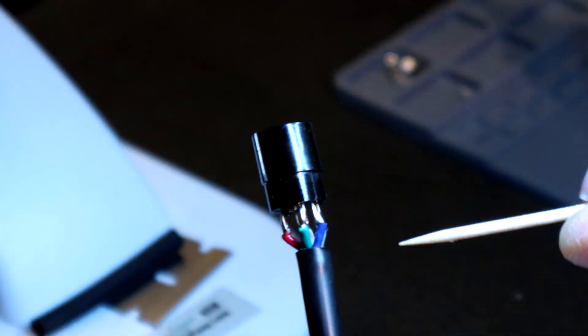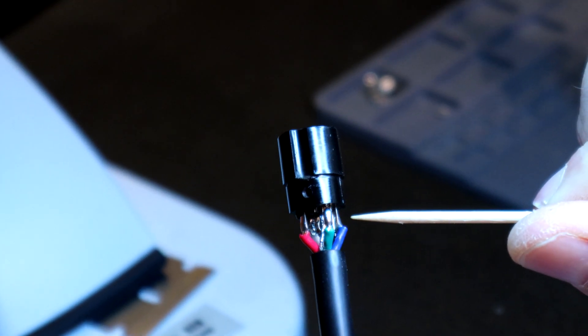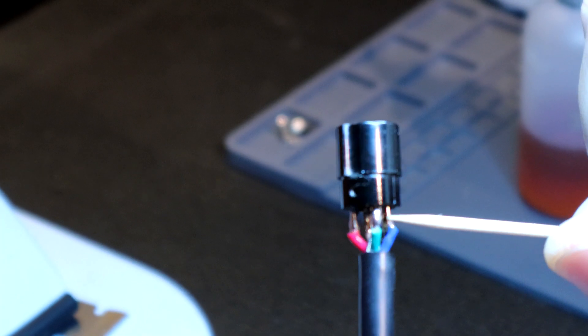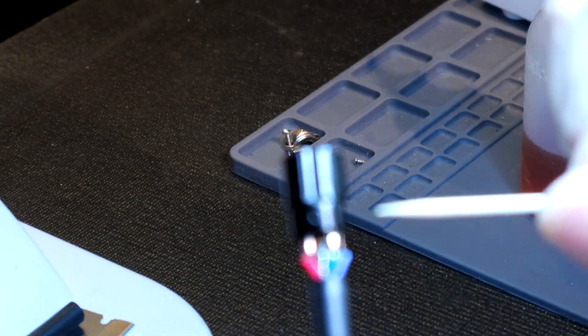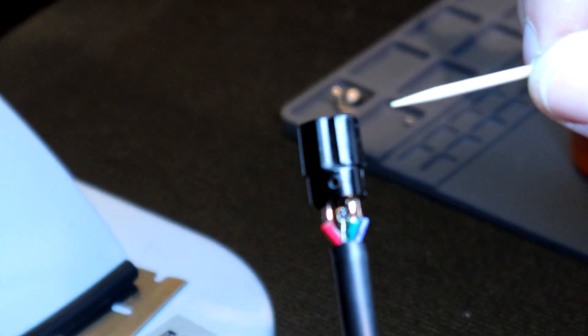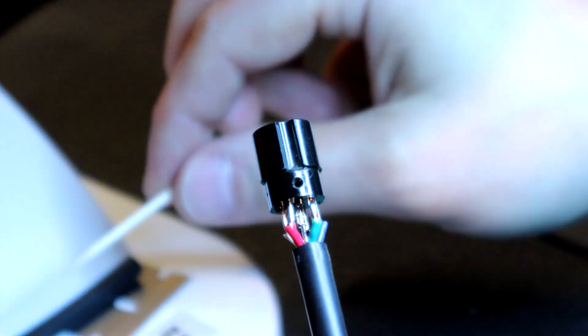When you use flux, an easy way to tell, because I get a lot of questions about that. Can I tell if they use flux or not? If you use flux, you'll usually get a beautiful bead, and it'll be very high chrome finish. If you do not use flux, it'll look messy. It'll look dabby. It will not look smooth. You're looking for smooth welds, is what we're looking for.